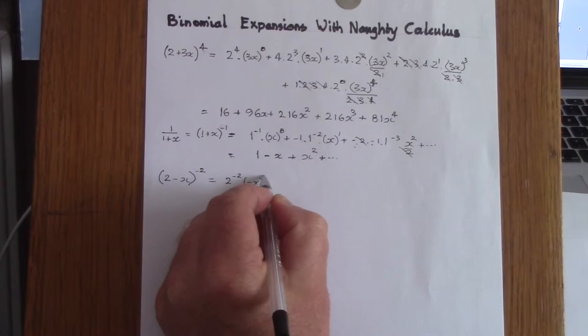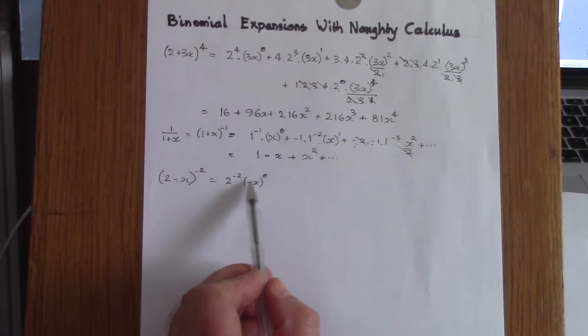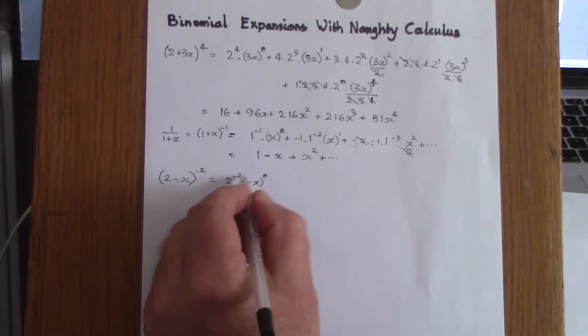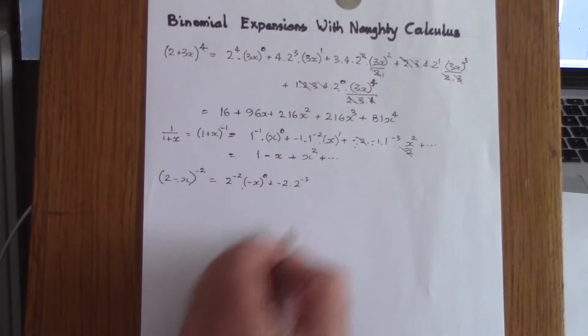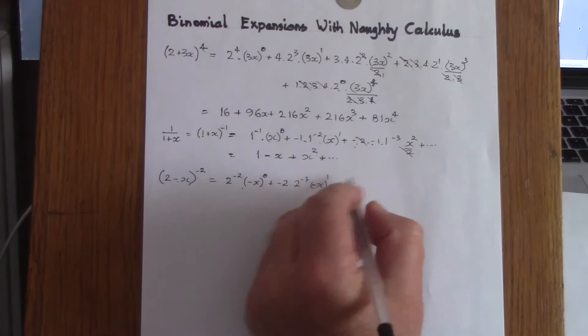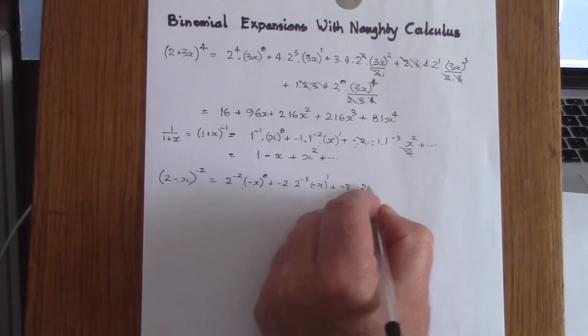Note that this minus sign must be kept inside the brackets for everything to work out. We differentiate 2 to the power of minus 2 to get minus 2 times 2 to the power of minus 3, then integrate to get minus x to the power of 1. For the third term we differentiate to get minus 3 times minus 2 times 2 to the power of minus 4.